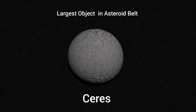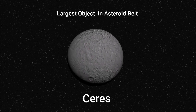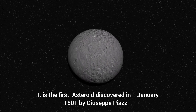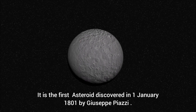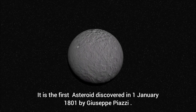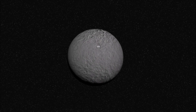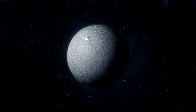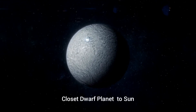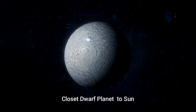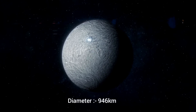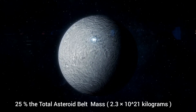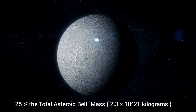Ceres is the largest object in the asteroid belt. In fact, Ceres was the first asteroid discovered, on the 1st of January 1801, by Giuseppe Piazzi. Ceres is so much bigger and so different from its rocky neighbors that scientists classified it as a dwarf planet in 2006. With a diameter of 946 kilometers, Ceres comprises 25% of the asteroid belt's total mass.